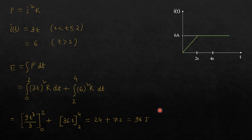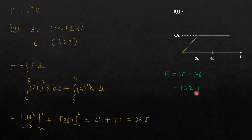So the total energy is 96 + 36 = 132 joules. This is the total energy absorbed by the inductor from the source, out of which 96 joules is dissipated as heat in the resistor and 36 joules is stored as magnetic energy in the inductor.